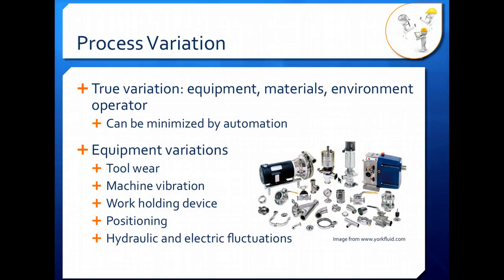Equipment variation comes from tool wear, machine vibration, work-holding devices, positioning, and hydraulic and electric fluctuations. This is talking about your equipment varying, possibly from piece to piece or over time. As you get wear, maybe your cutting blades get a little bit duller, or you start getting fouling or material buildup on the inside of your pipes. Your equipment is going to vary.